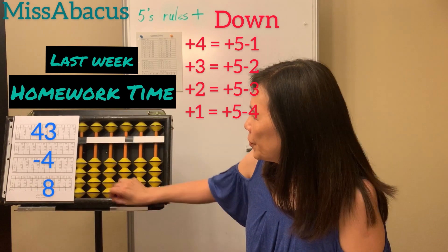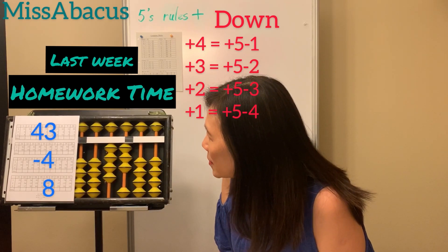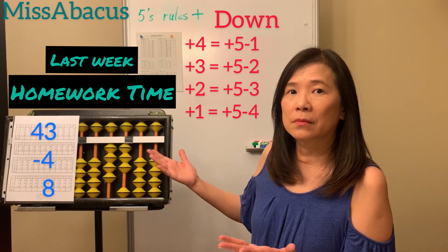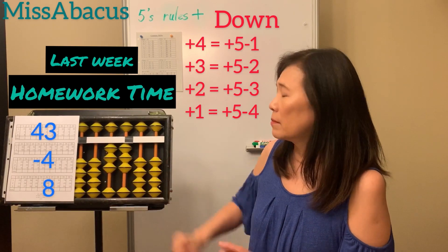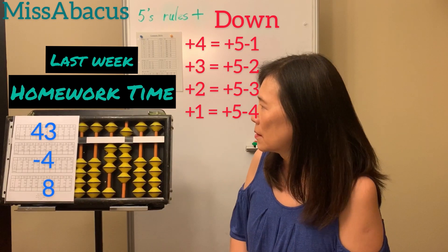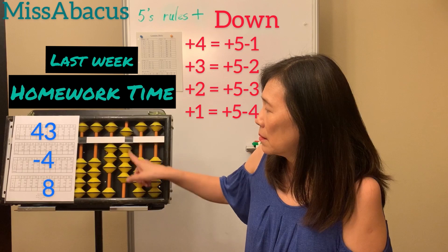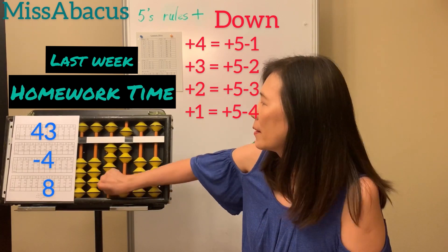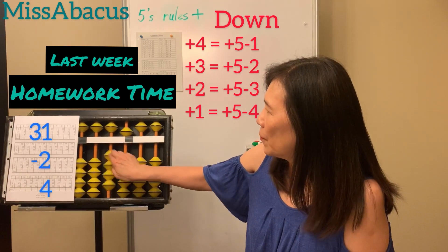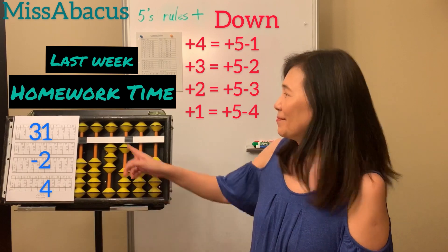Let's do number three: 43. Three minus three, minus four — you only have three. Minus — take away, not enough. Take away ten, plus four's complement six. Next number plus eight: minus two plus ten. Answer 47.